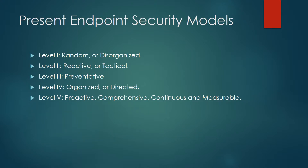There are five endpoint security maturity models. Level one is random or disorganized, in which organizations display little to no policy, no endpoint inventory, low user awareness of security, and ad hoc installation. Level two is reactive or tactical, where policy is weak, overbroad or poorly communicated, endpoint inventory is non-existent or out of date, and there is some user awareness but no formal training.